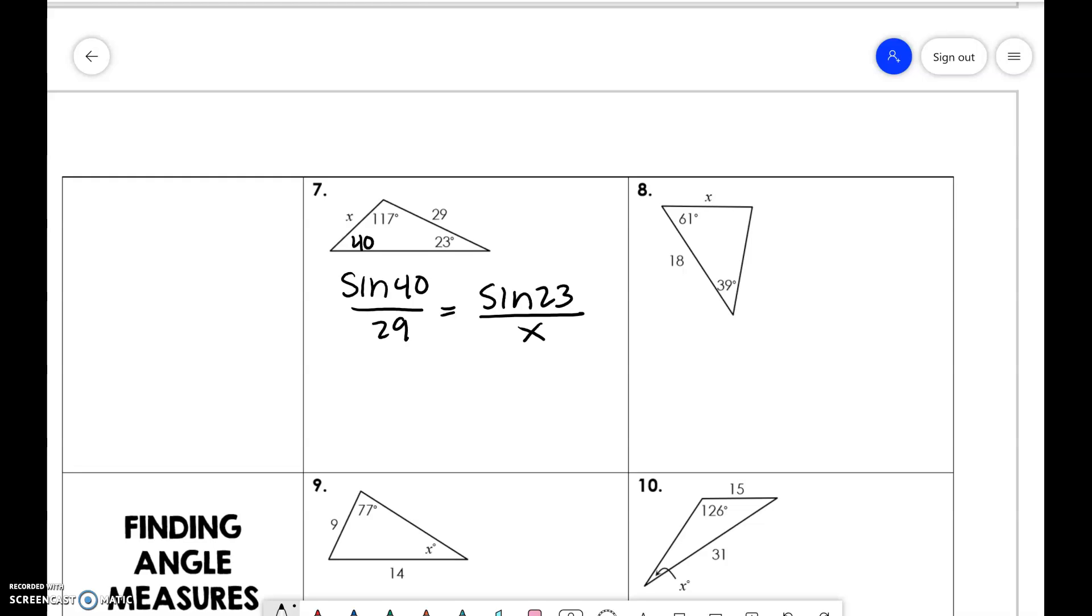So 29 times sine of 23 divided by sine of 40. x is 17.6.